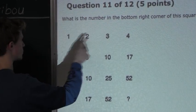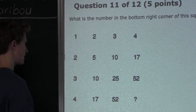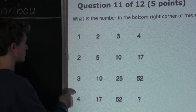you can see that in the top row, the numbers just go up by 1, 1, 2, 3, 4, and in the far left column, you can just see it's the exact same thing, 1, 2, 3, 4.